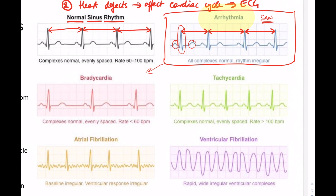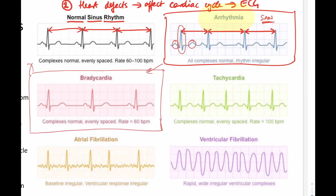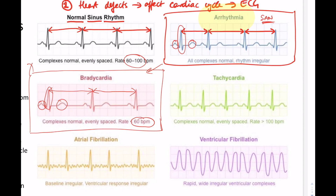Next, bradycardia: comparing to normal sinus rhythm, the time it takes for each cardiac cycle is much longer than normal, meaning the heart rate is much lower. The individual waveforms — atrial contraction, ventricular contraction, and diastole — are all fine. Normal heart rate is 60 to 100 beats per minute; bradycardia is characterized by a heart rate less than 60 beats per minute. Again, this is likely due to misfunctioning of the sinoatrial node — the waves of depolarization are not being sent out frequently enough.